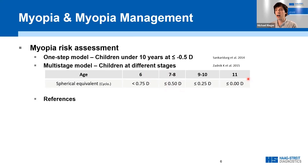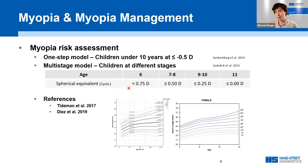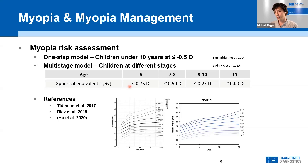Since 2016 and 2017, percentile curves for axial length growth allow similar predictions. We already know these representations from growth curves used in child development. The data published by Tideman et al. allow prediction of myopia risk by axial length relative to the patient's age, based on a cohort of European children. Diez et al. published growth curves for Asian children two years later. More recently, research has shown that the time of myopia onset can predict refractive error and axial length in later age. There is a lot of research in both treatment options and detection/prediction models.